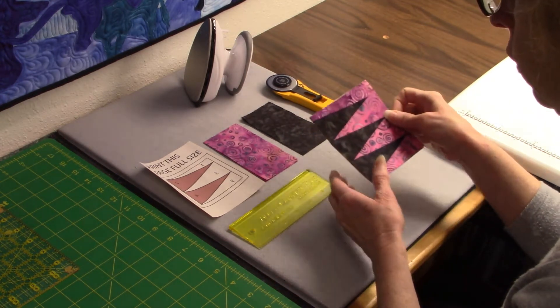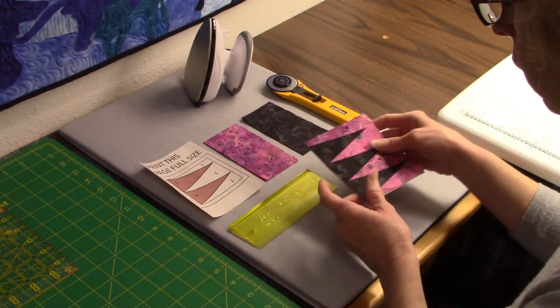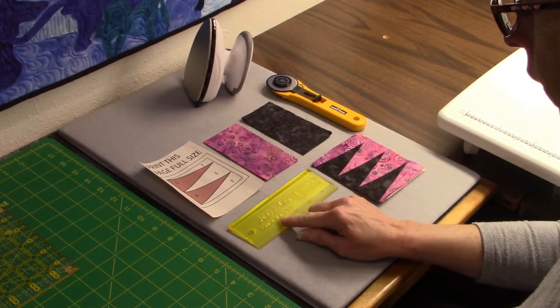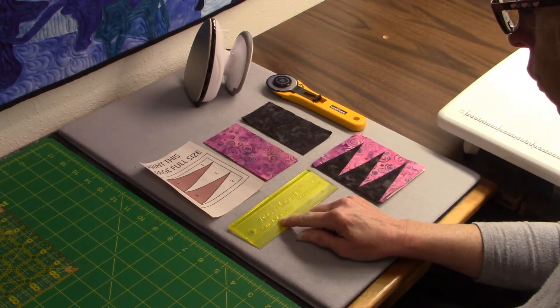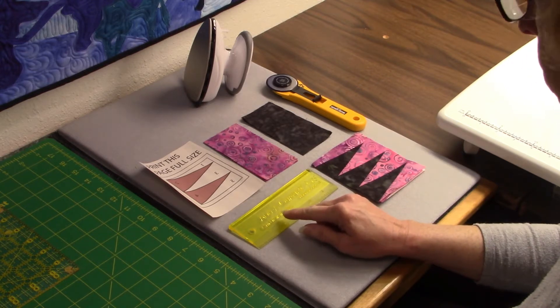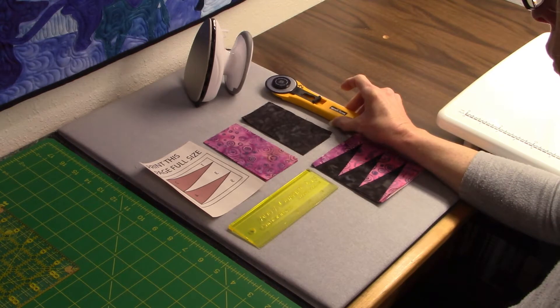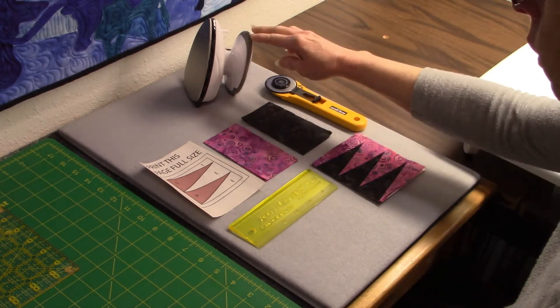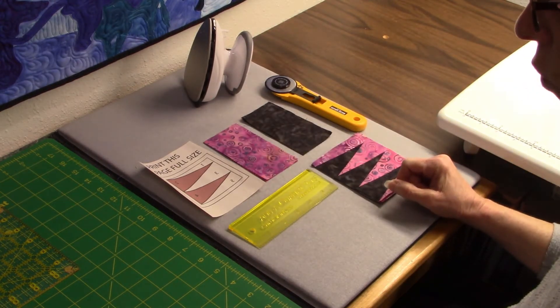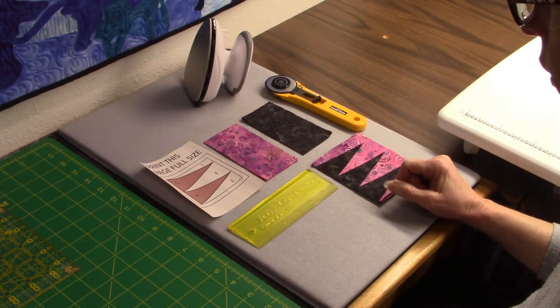So the first thing you want to do, you're going to need what we like to use is an add-a-quarter plus ruler. You don't have to have that but it's very nice and useful and helpful. We have a little rotary cutter and a little iron so that we can iron right here at our table and a cutting mat which helps.